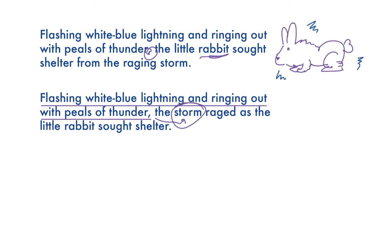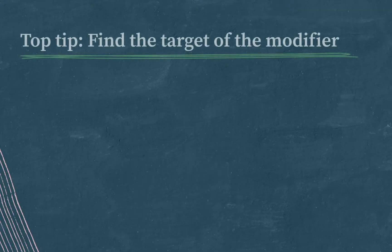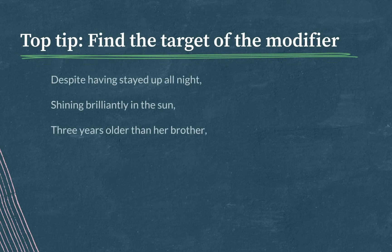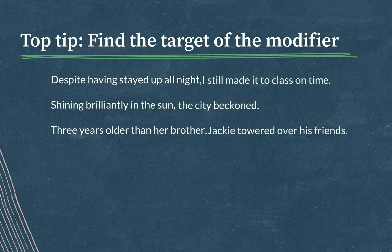Top tip: find the target of the modifier. If you have a sentence that begins with a phrase like 'despite having stayed up all night,' 'shining brilliantly in the sun,' or 'three years older than her brother,' the next thing should be the noun that the phrase is describing — the target. So: 'Despite having stayed up all night, I still made it to class on time.' 'Shining brilliantly in the sun, the city beckoned.'